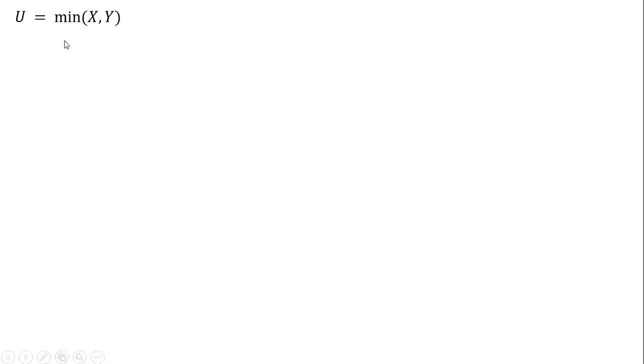So utility is the minimum of X and Y. X is units of good X, Y is units of good Y. The consumer has income M, and the consumer faces the price of good X of P subscript X, and the price of good Y is P subscript Y.